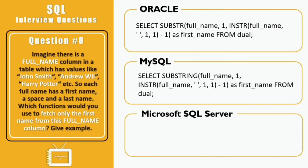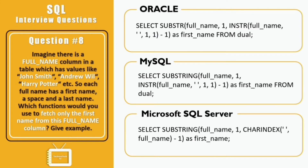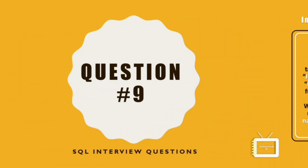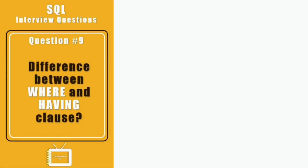In MySQL, we can use the SUBSTRING function to get a substring based on start and end position, and the INSTR function to find the position of a particular string. In Microsoft SQL Server, we use the SUBSTRING function to get a substring based on start and end position, and the CHARINDEX function to find the position of a particular string within the text.